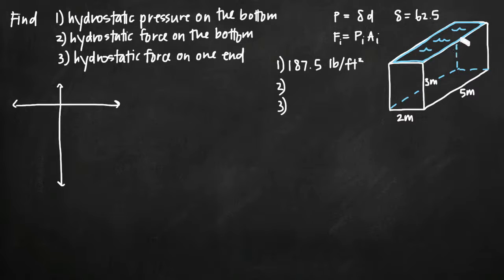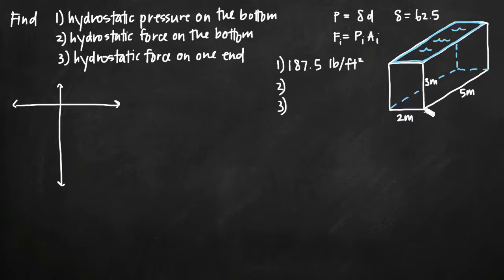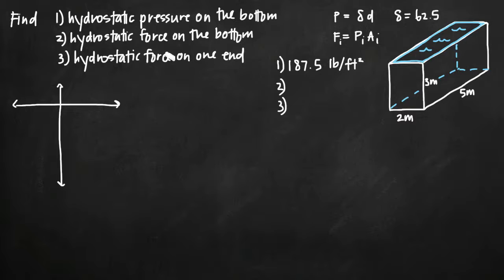If it's a different liquid other than water, you may need to use a more complicated pressure formula. But if it's water, you can assume 62.5 and multiply that by depth. In this particular problem, we've been given a tank which is 2 meters wide, 3 meters deep, and 5 meters long. It is completely filled with water, and we're going to find the hydrostatic force on the bottom of that tank and the hydrostatic force on one end of the tank.